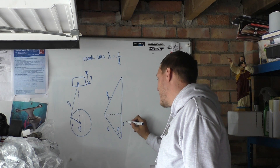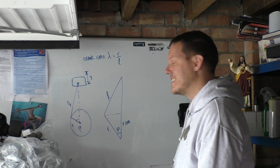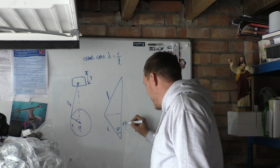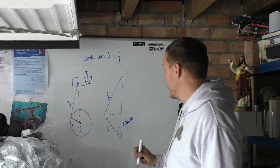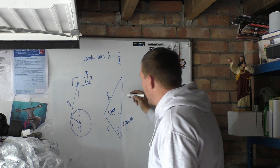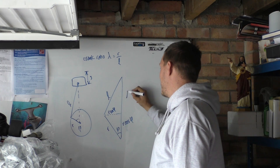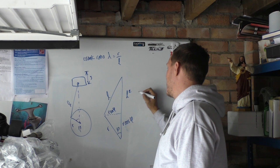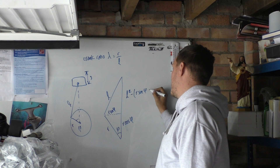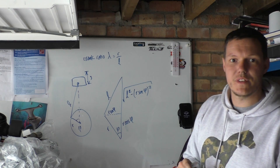This will be our R cosine - so we've got our cosine there - which means that this will be our R sine there. And then this - this will be L squared, and that will be minus our R sine squared, square rooted.